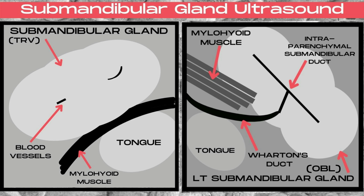You commonly can see little pieces of blood vessels within the middle of the gland. The myelohyoid muscle is going to be inferior to the gland, with the hyperechoic tongue below that. The image to the right is an oblique representation of the submandibular gland, and this is the plane that you want to get in order to try to visualize Wharton's duct, which would be located below the myelohyoid muscle and anterior to the tongue on ultrasound.